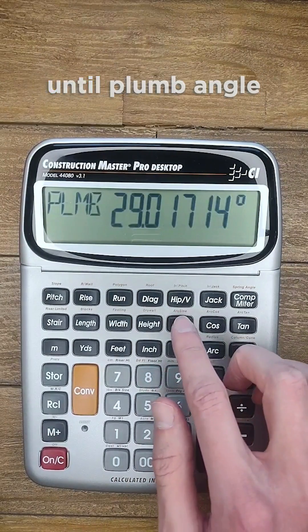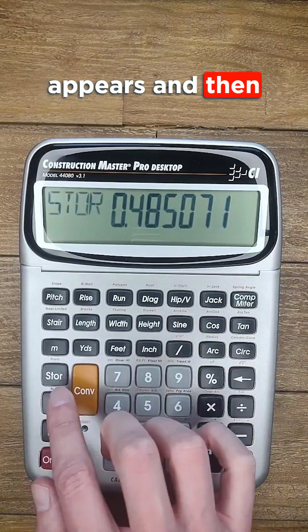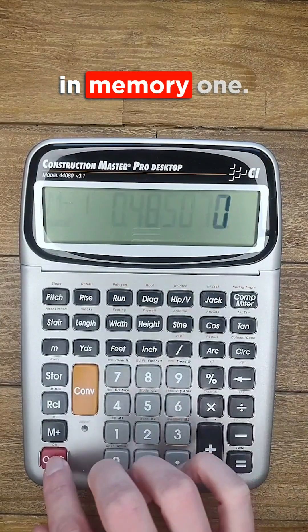Keep pushing the hip valley button until plumb angle appears and then find the sine of that value and store it in memory 1.